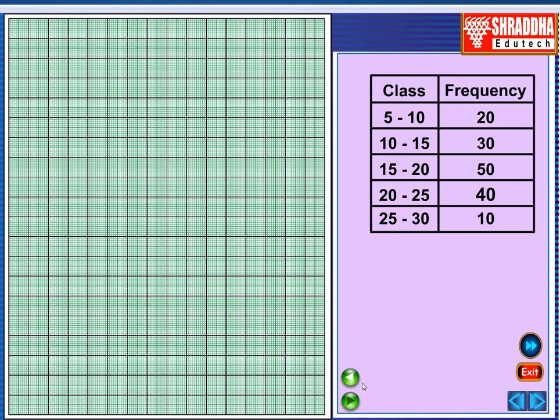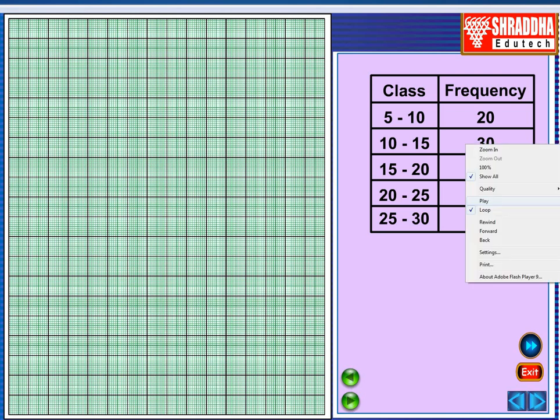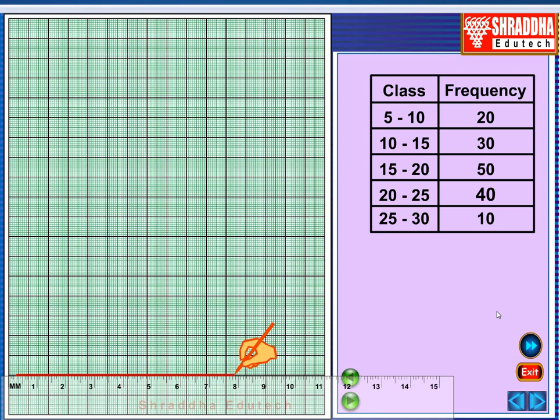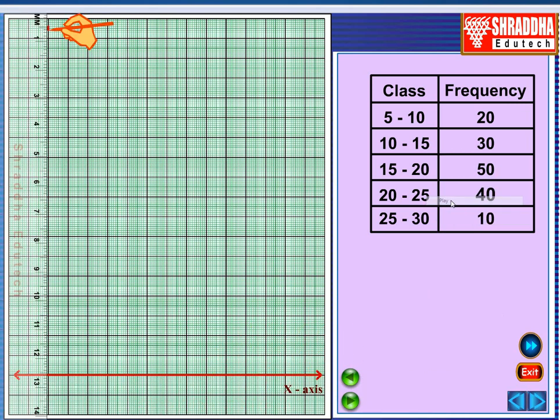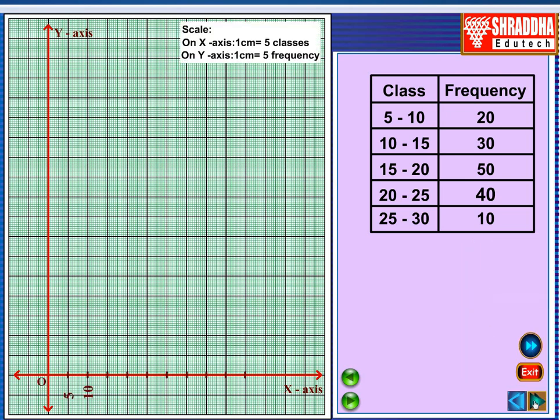We draw X axis as well as Y axis. Interaction point is called as O. Then, on X axis write 5, 10, 15, 20, 25, 30, 35 as a class.